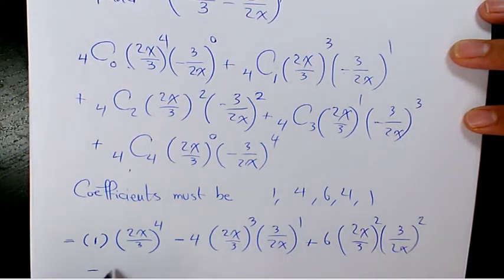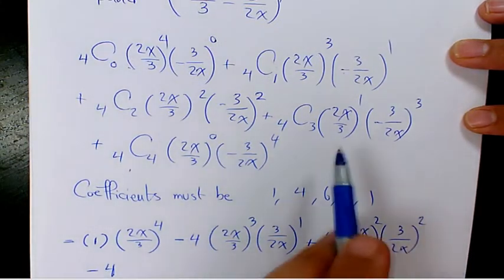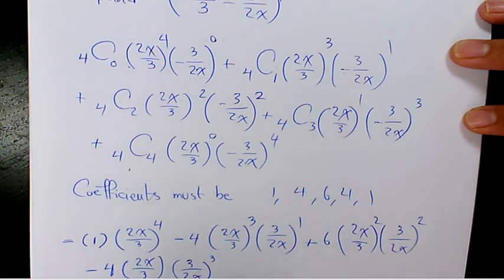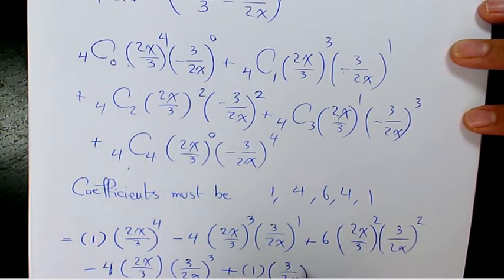Then we have negative 4 times 2x over 3 times 3 over 2x to the power of 3, plus 1 times 1 times 3 over 2x to the power of 4.